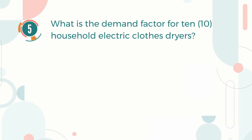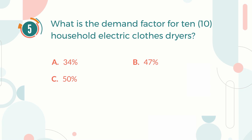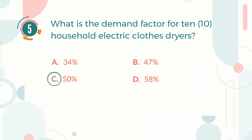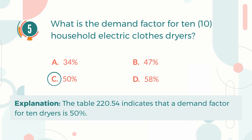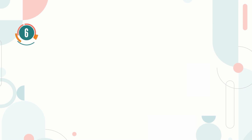Number 5. What is the demand factor for 10 household electric clothes dryers? A. 34%. B. 47%. C. 50%. D. 58%. The correct answer is C, 50%. Explanation: Table 220.54 indicates that a demand factor for 10 dryers is 50%.